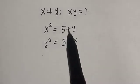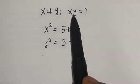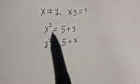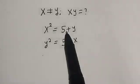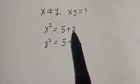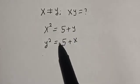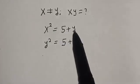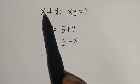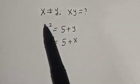Hello, welcome to Magist. In this class, I want to find the value of x and y from this equation: x squared is equal to 5 plus y, then y squared is equal to 5 plus x, provided x is not equal to y.